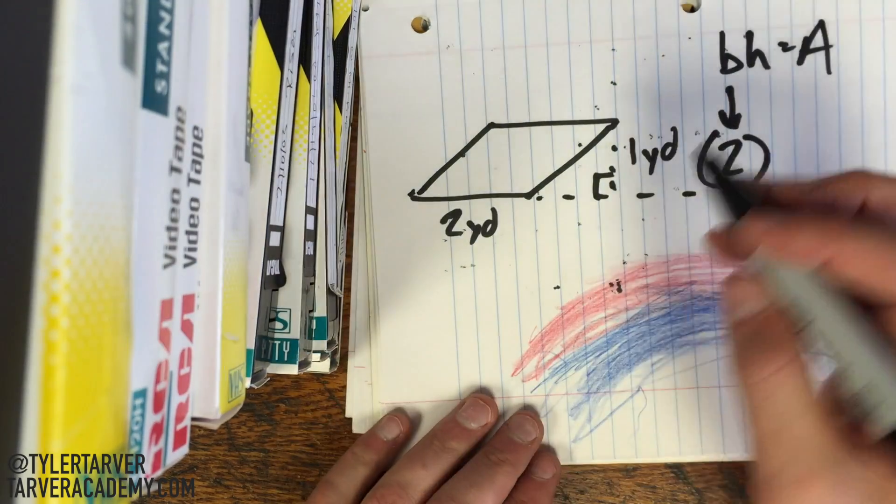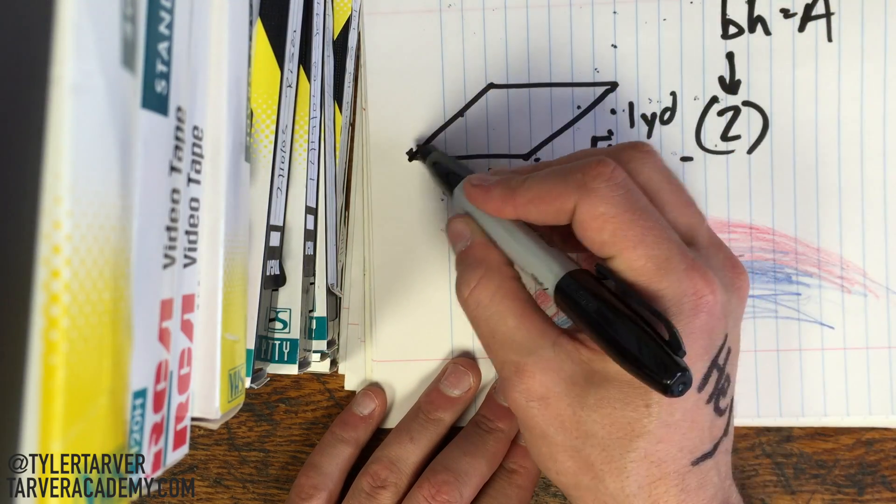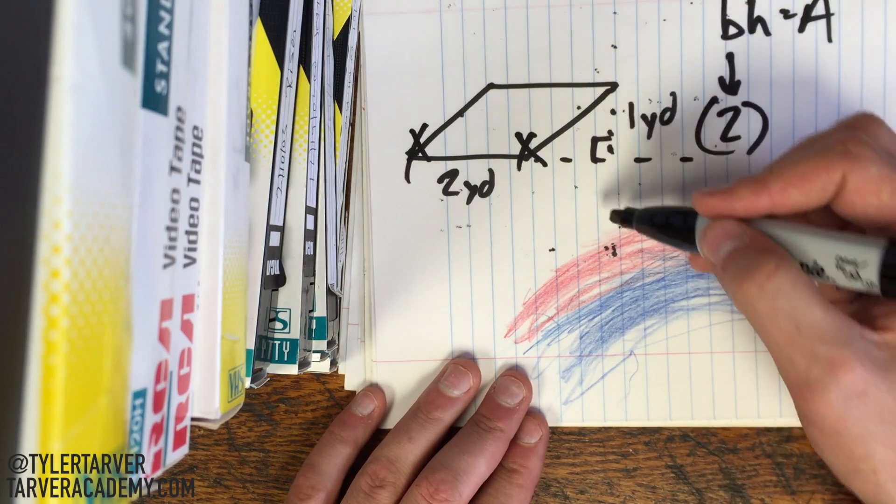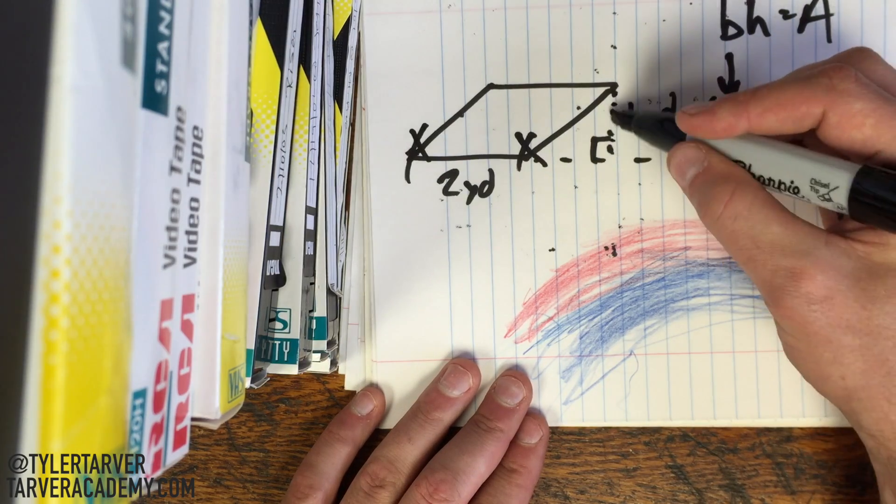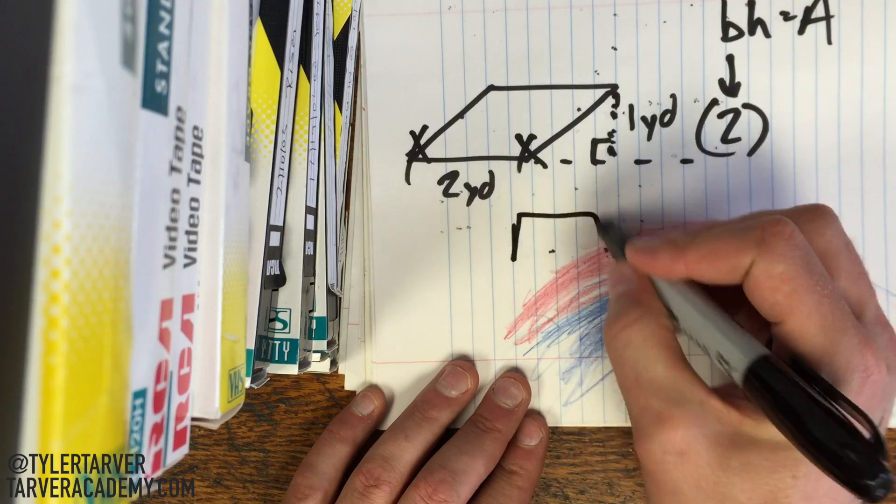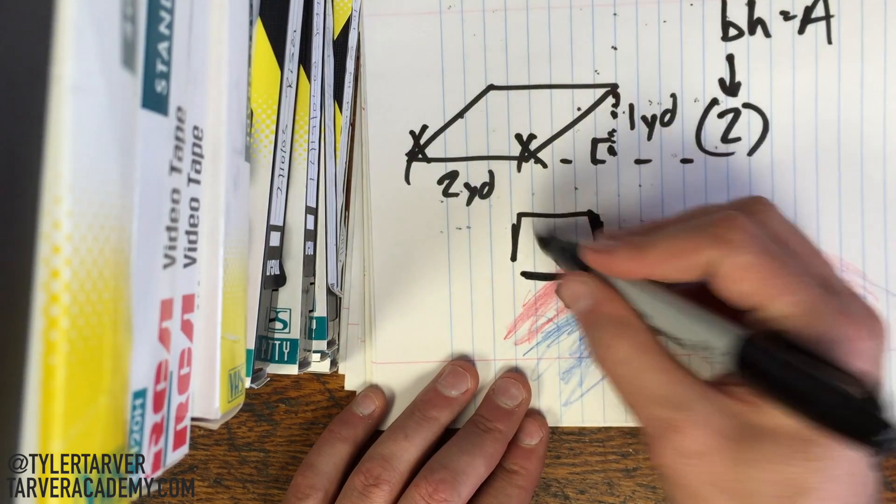When you're finding height, the rule is that it has to go from an angle that is not connected to that, so not that angle, not that angle, and it has to come down and hit it at a 90 degree angle. Now, for some parallelograms, that's gonna mean creating an imaginary line that is not inside of it, okay? If you had a square, you could just use like one side of it, base, and height, but this isn't a square.